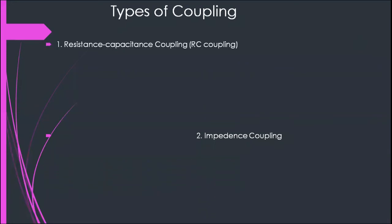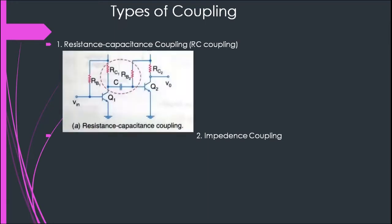Now let's think about different types of coupling schemes. The first one is the resistance-capacitance coupling, or simply RC coupling. This is the most important method of coupling a signal from one stage to the next in the case of a multi-stage amplifier. In this method, the signal developed across the collector resistor RC1 of the first stage is coupled through the capacitor C and given to the base of the next stage. The cascaded stages amplify the signal and the overall gain is equal to the product of the individual stage gains. These types of amplifiers are called resistance-capacitance coupled multi-stage amplifiers.